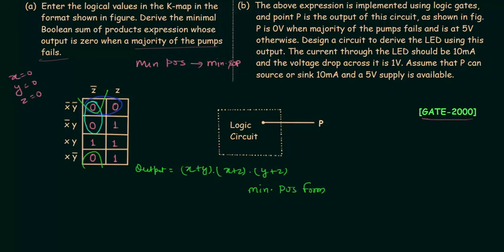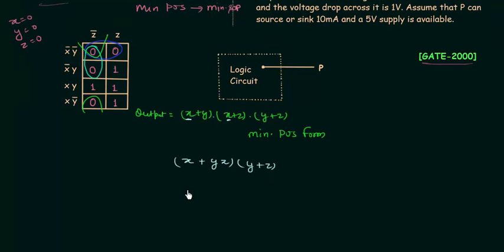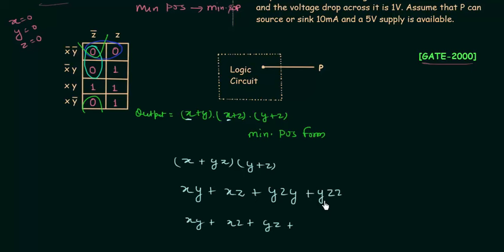Now I will obtain the minimal SOP form using the minimal POS form: (x+y)(x+z)(y+z). X is common in the first two terms, so taking x common gives x(y+z). Expanding using the distributive law: xy + xz + yz + y·z·y + y·z·z. Since y·z·y = yz and y·z·z = yz, those reduce, giving the minimal SOP form: xy + xz + yz. This is the answer to Part A.